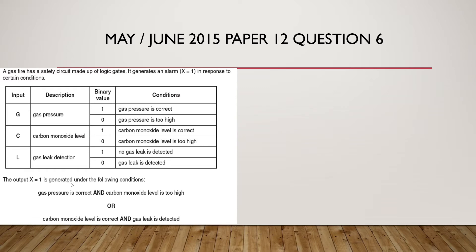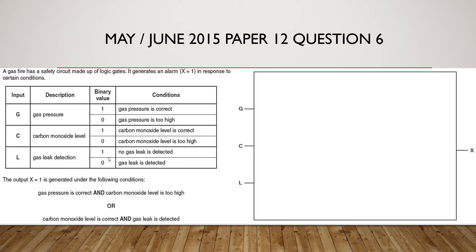x=1, so a straight line will be drawn from its corresponding gate to x. For g: gas pressure is correct means the binary value is 1, so g=1. Carbon monoxide is too high means the value is 0, so c=0. Carbon monoxide is correct means the value is 1, so c=1. Gas leak is detected means the value of l=0.